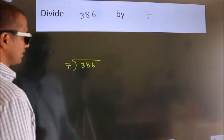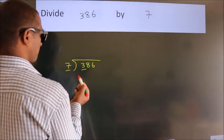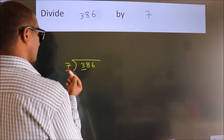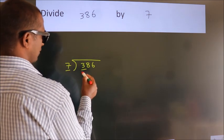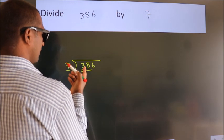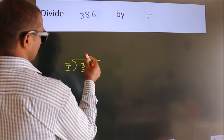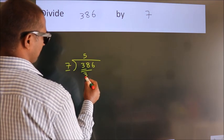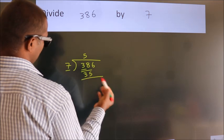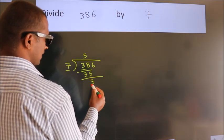Next, here we have 3, here 7. 3 is smaller than 7, so we should take 2 numbers, 38. A number close to 38 in the 7 table is 7 fives, 35. Now we subtract and get 3.